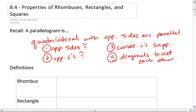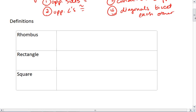All right. What we're going to talk about today are rhombuses, rectangles, and squares, which are three types of parallelograms.